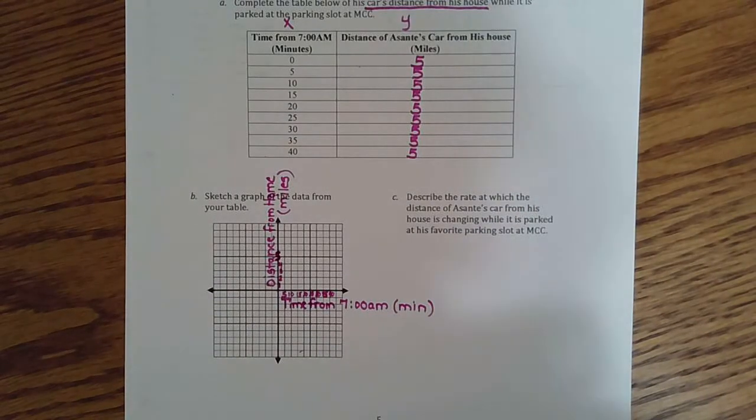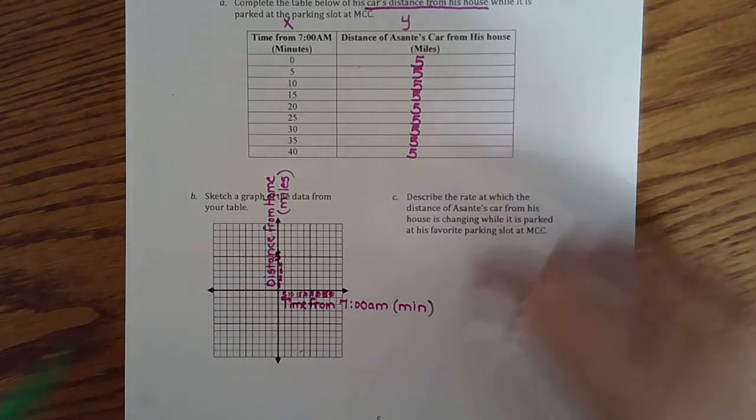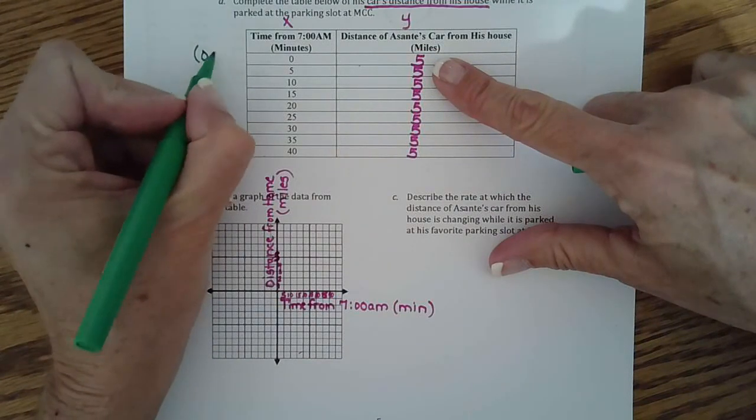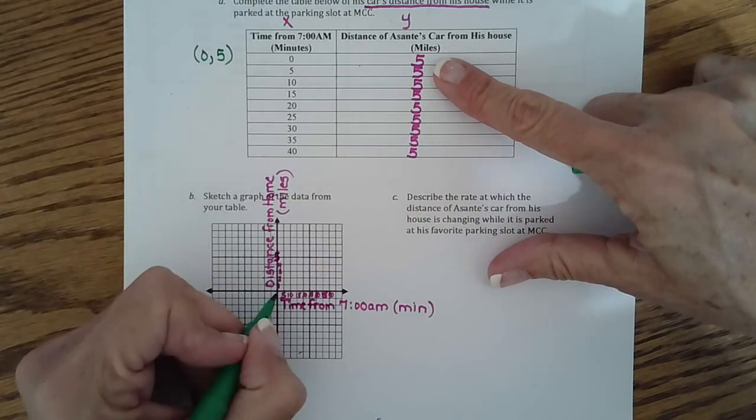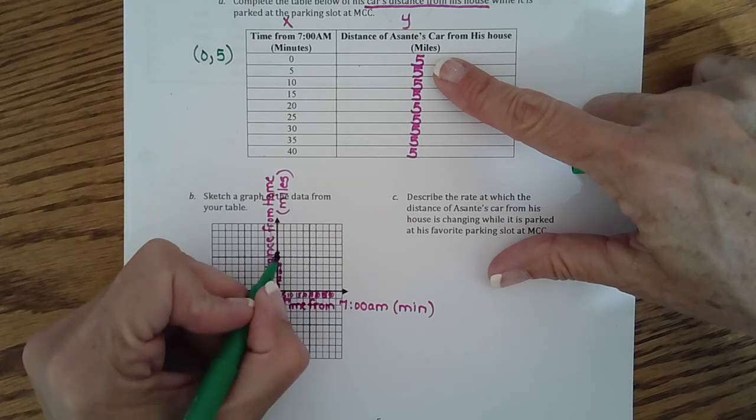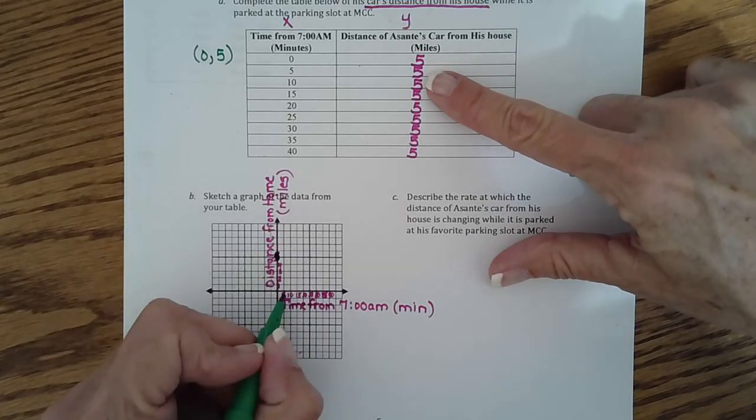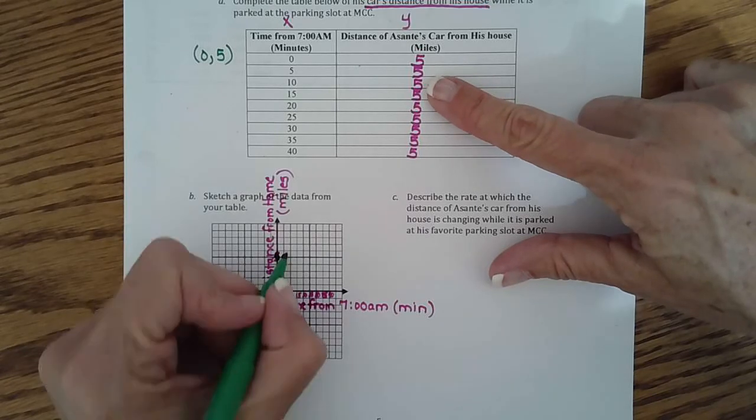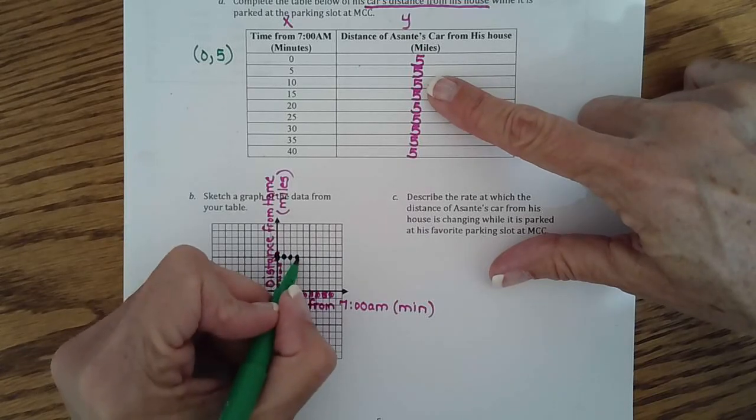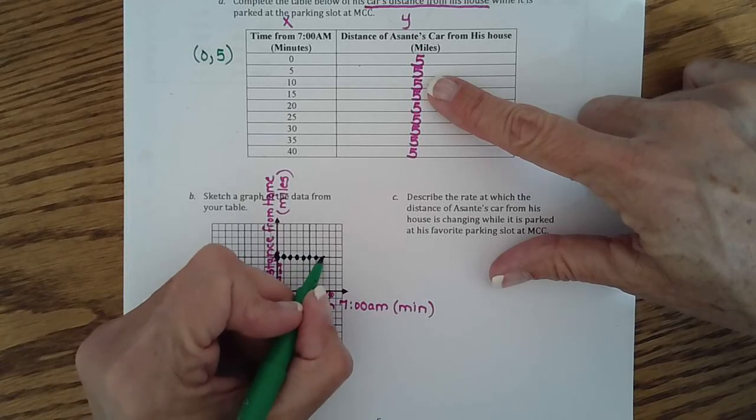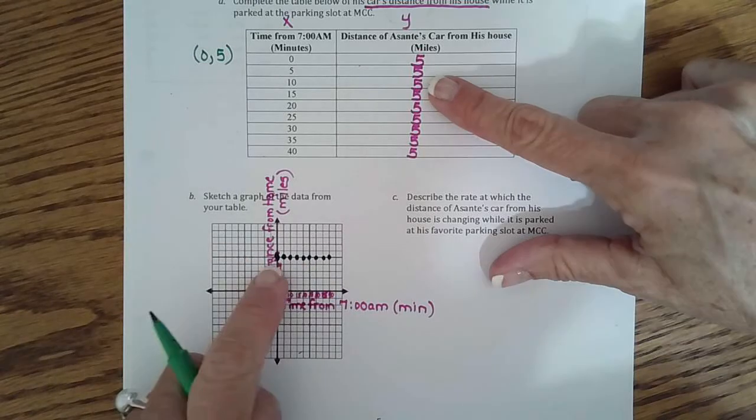So now in a different color, let's label those points. Alright, so this goes with the point (0, 5). So 0, 1, 2, 3, 4, 5. And 5 goes with 5, and 10 goes with 5, and 15 goes with 5, and 20, and 25, and 30, and 35, and 40. So they all go with 5.